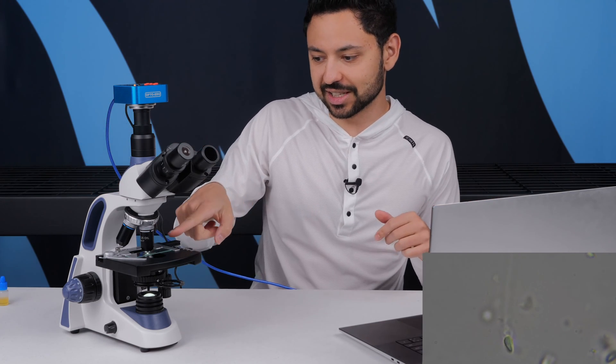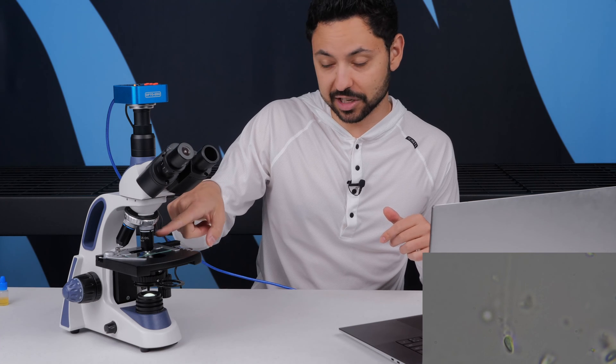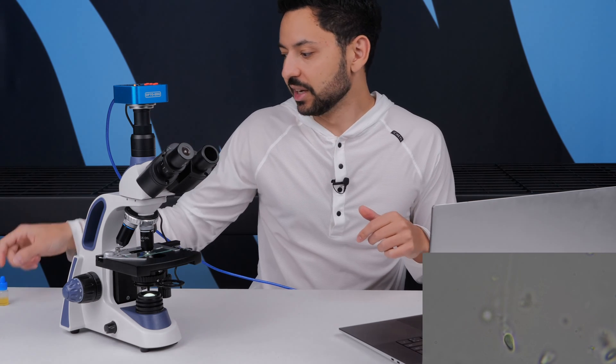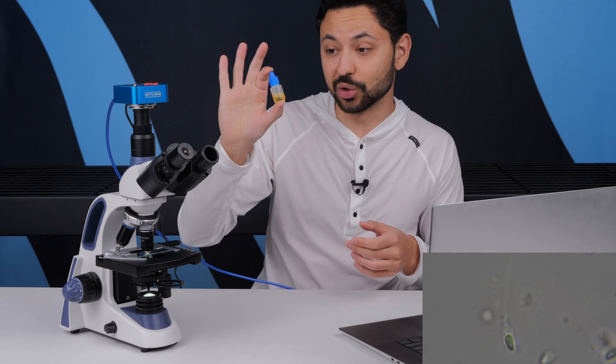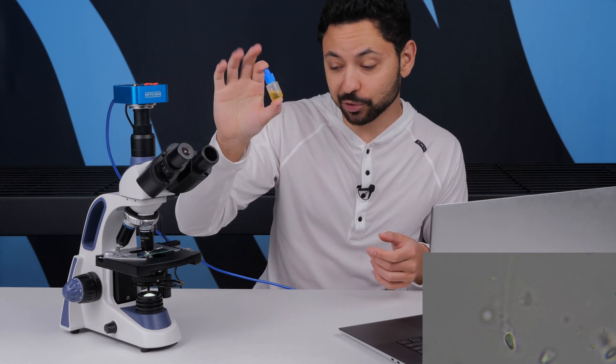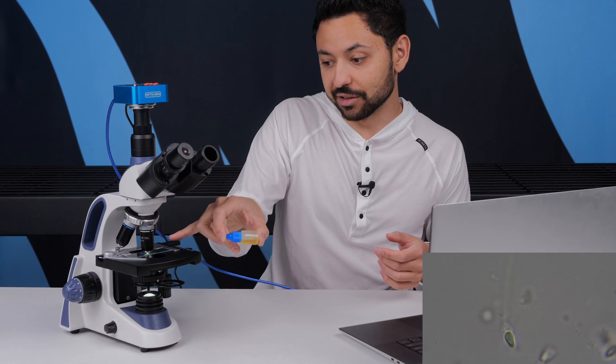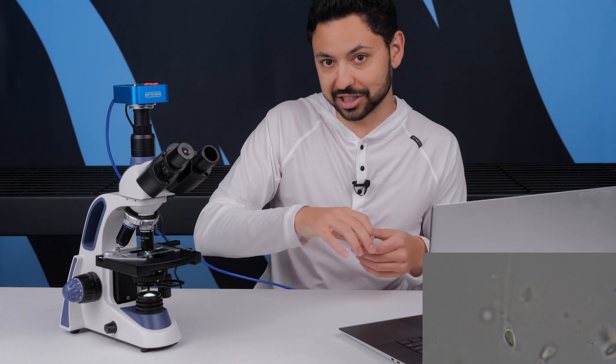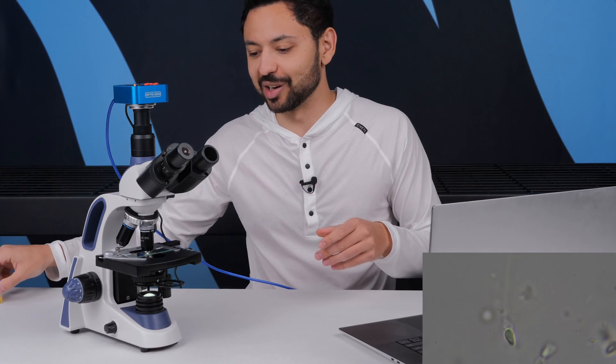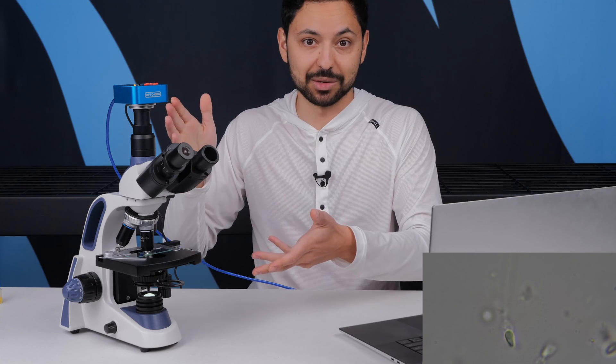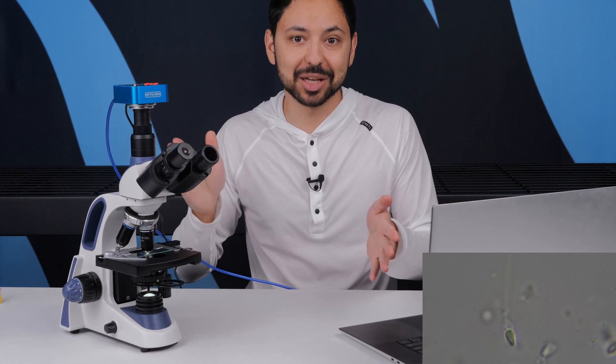One of the other catches here is that not only is this 100x objective pretty much touching the cover slip, it's now also using what's called oil immersion. So you have to put a drop of oil in between the cover slip and the microscope objective to get rid of all the pesky air in between and that's what makes the system work. So at this high of magnification, things get more complicated.